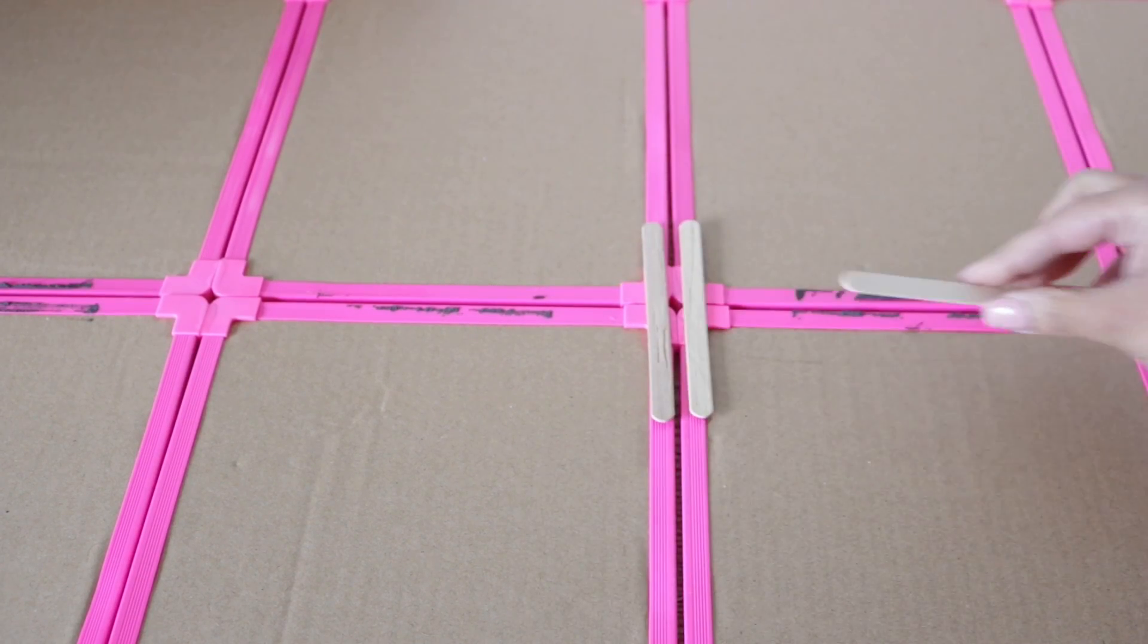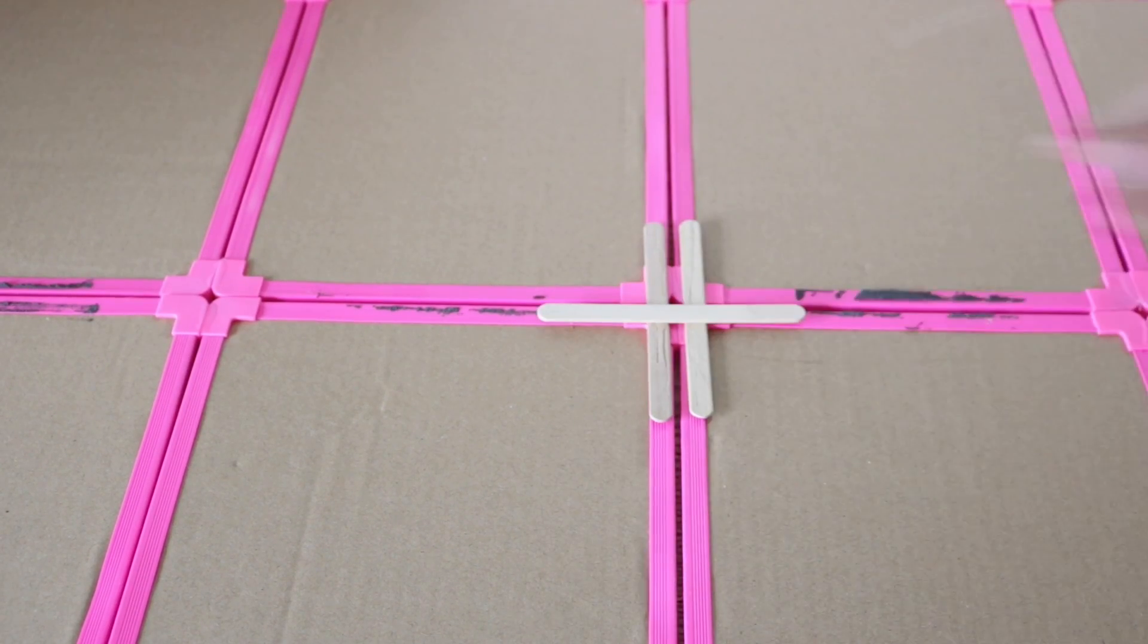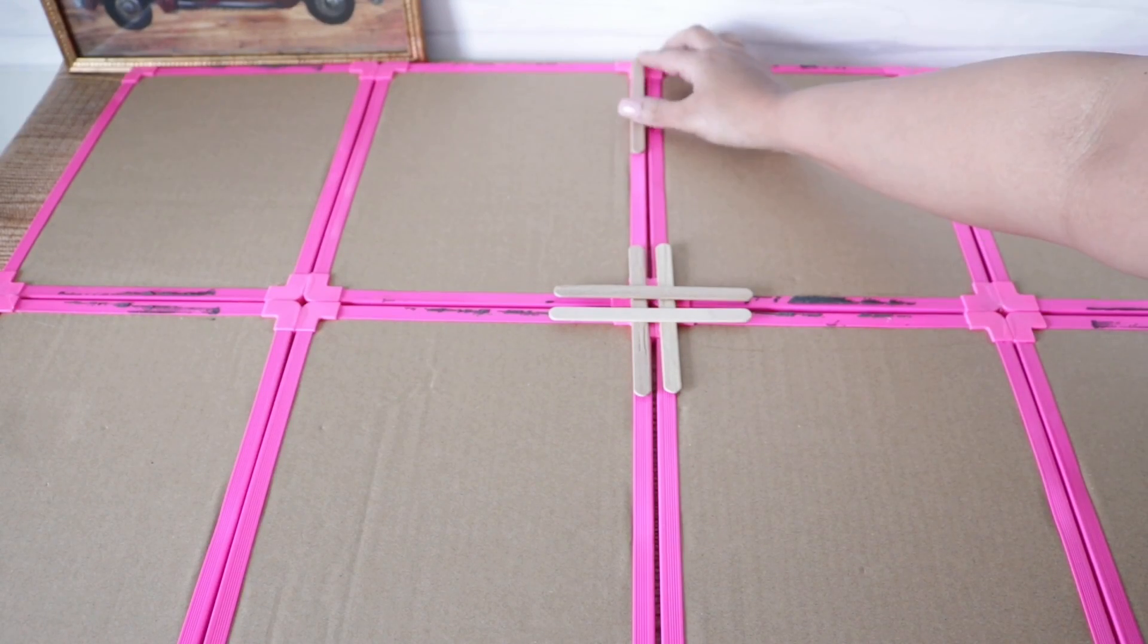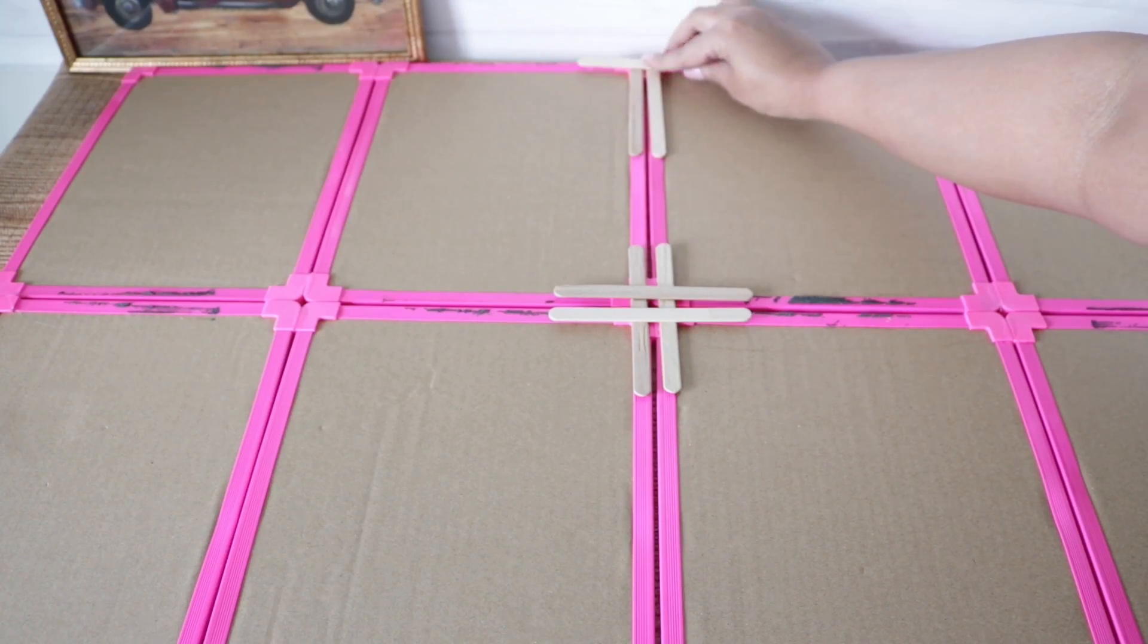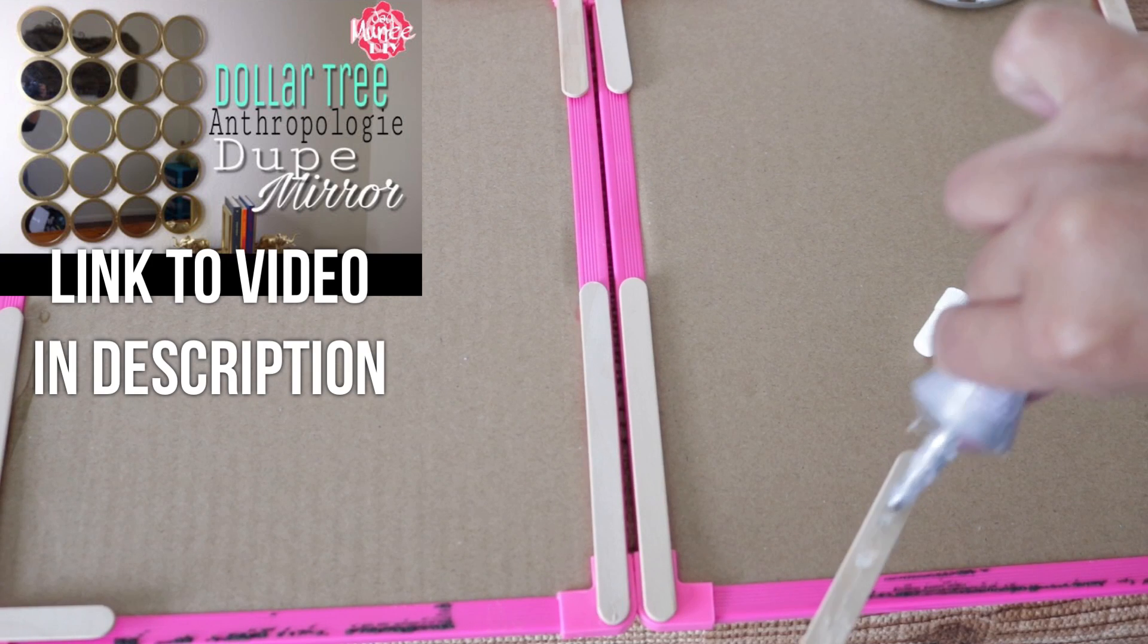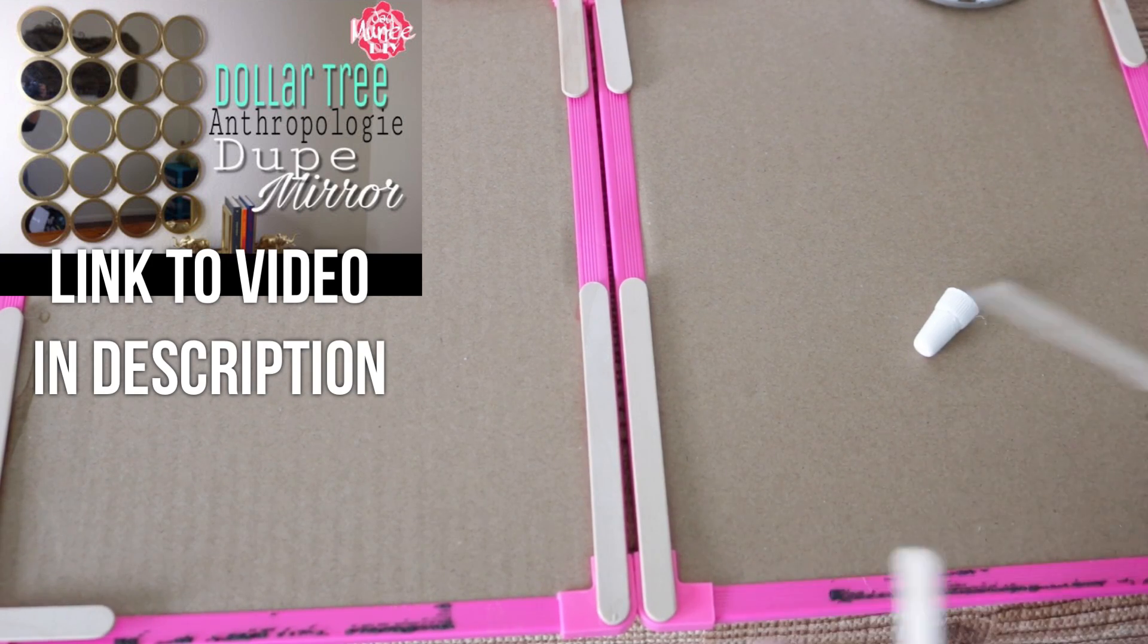I'm also going to add two going in the other direction, and I'm going to do this to all of my frames to make sure that they don't fall apart. This is the exact same way that I attached my mirrors in my Anthropologie wall dupe video. I'll leave that video below, but it's one of my favorite DIYs.